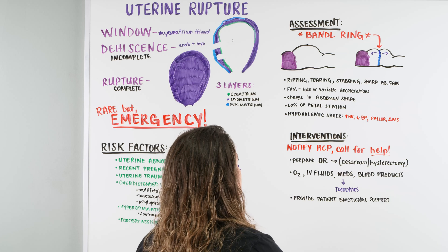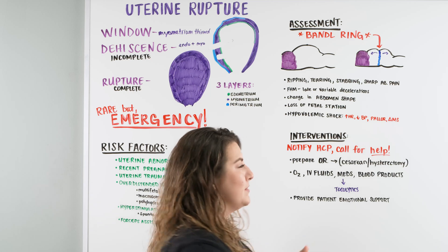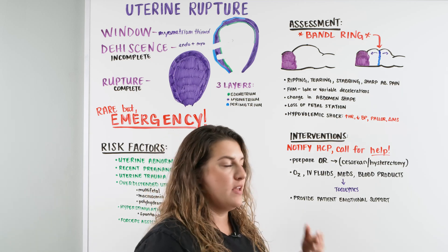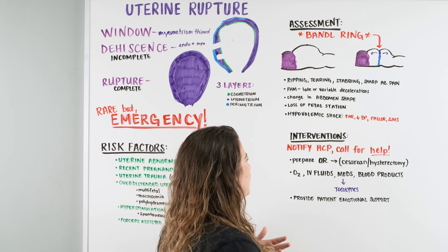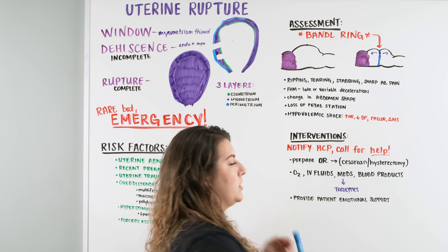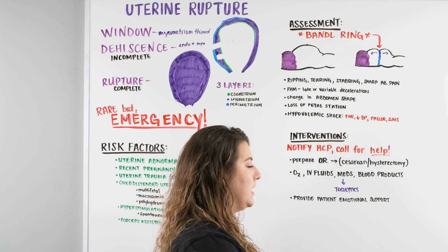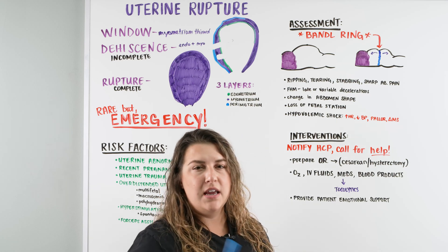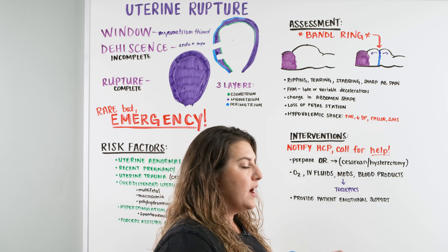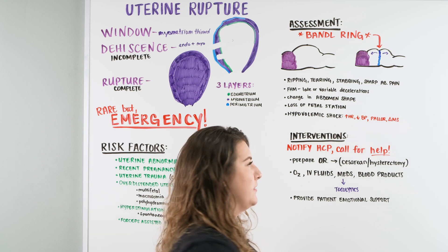The patient is also going to report signs and symptoms: that ripping, tearing, stabbing, sharp abdominal pain. They'll say this one feels different, this one feels weird. You also want to check the fetus — check baby inside and monitor the fetal heart monitor. Are there late or variable decelerations? Is the baby showing some type of distress signaling that something more than normal labor pains is going on?